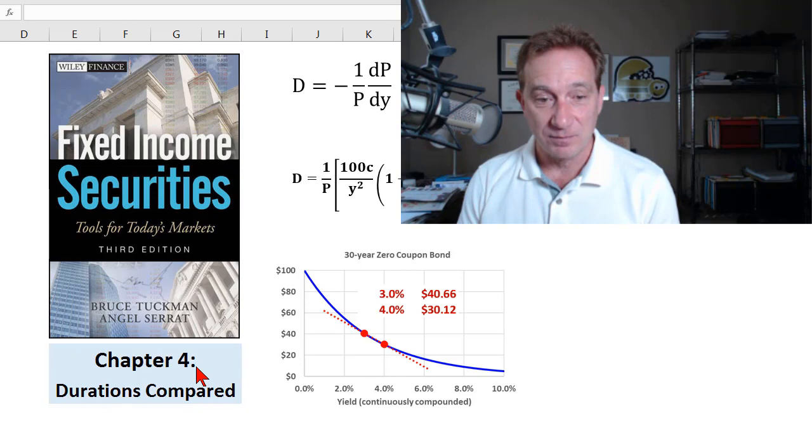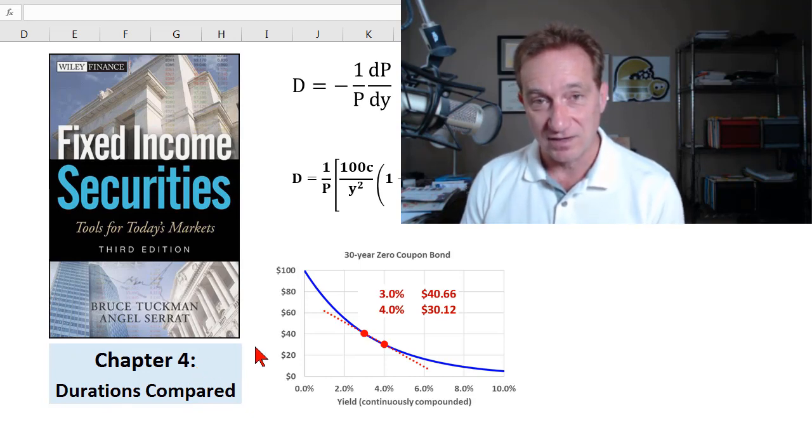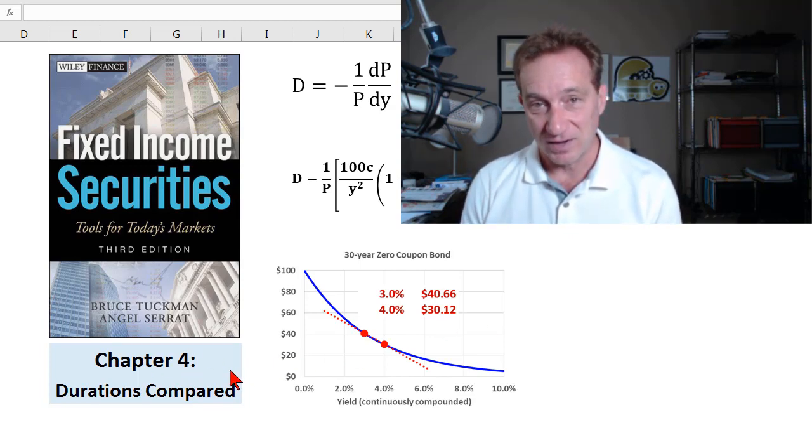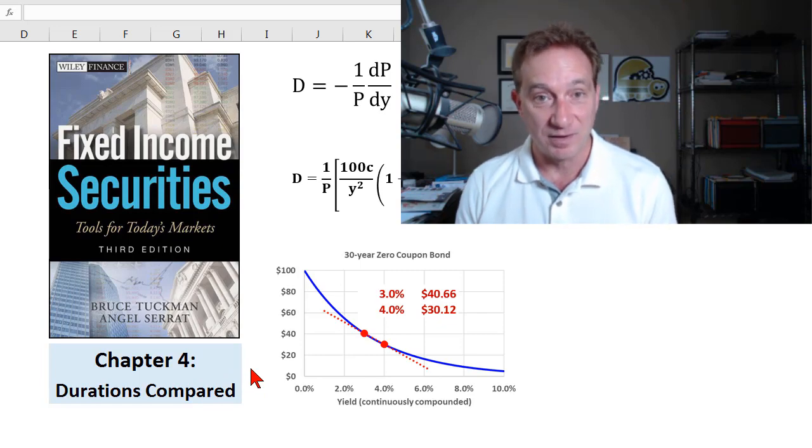But I'm following Bruce Tuckman's Chapter 4, so I used his examples with the sort of messy numbers. So this video, as quickly as possible, I just wanted to compare each of the three durations so we're clear on the difference using my simple example with round inputs of a three-year bond.